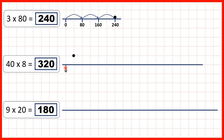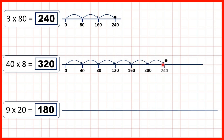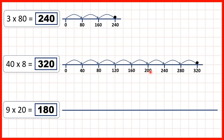So if we count in steps of 40, we get 40, 80, 120, 160, 200, 240, 280, 320. Counting in steps of 40 is just like counting in steps of 4, but with a zero as our ones digit.